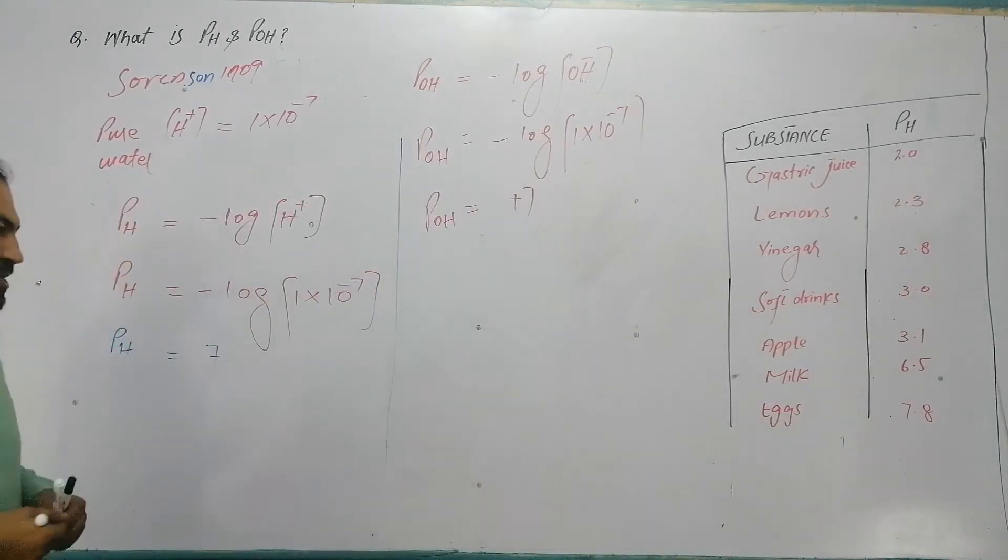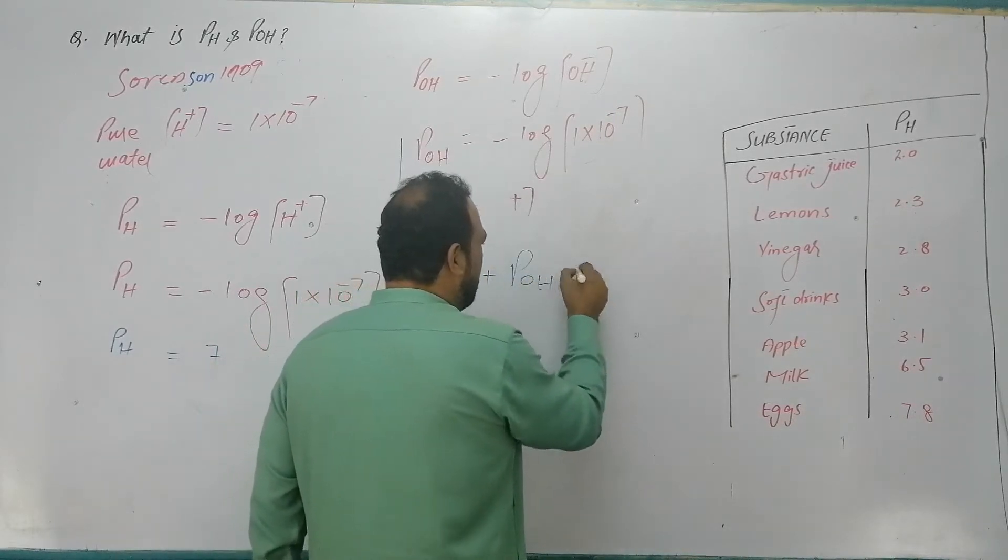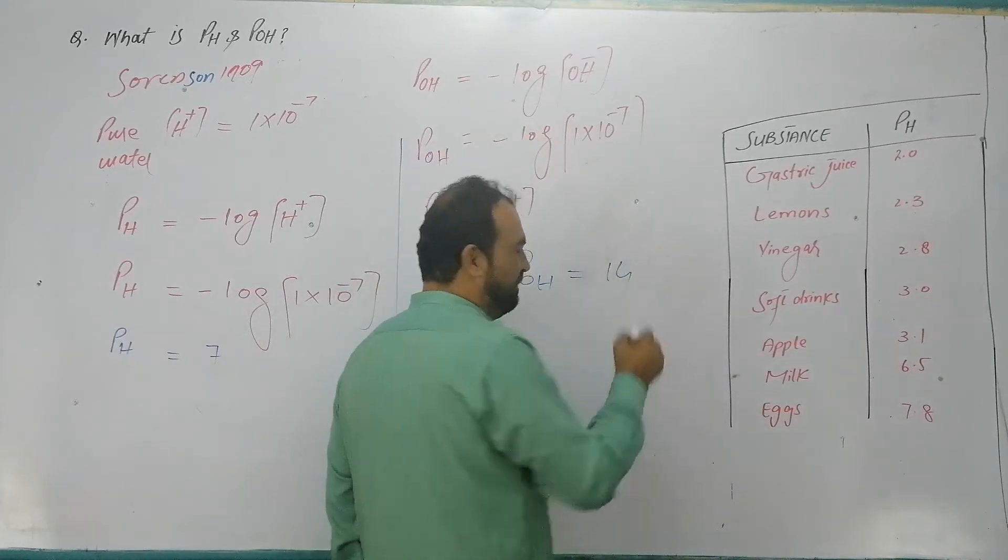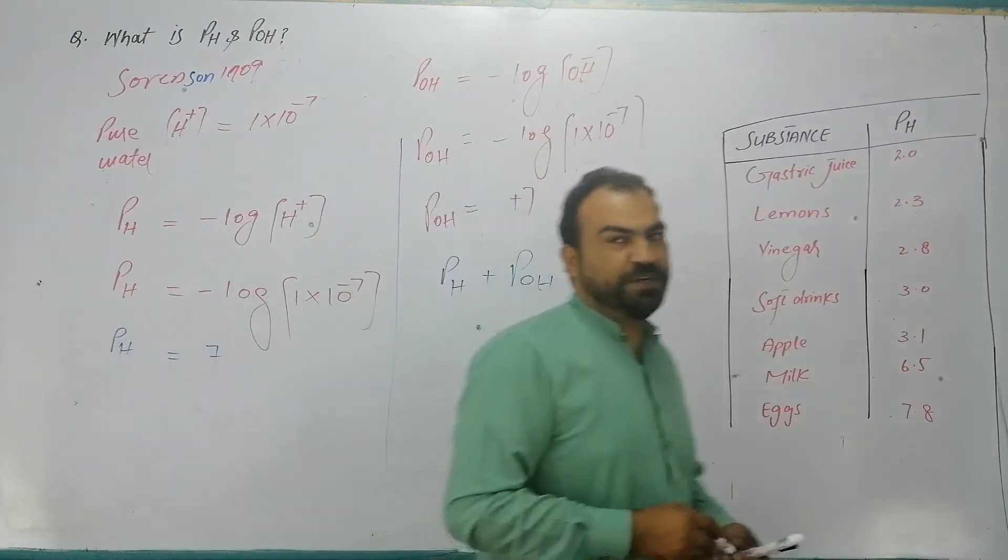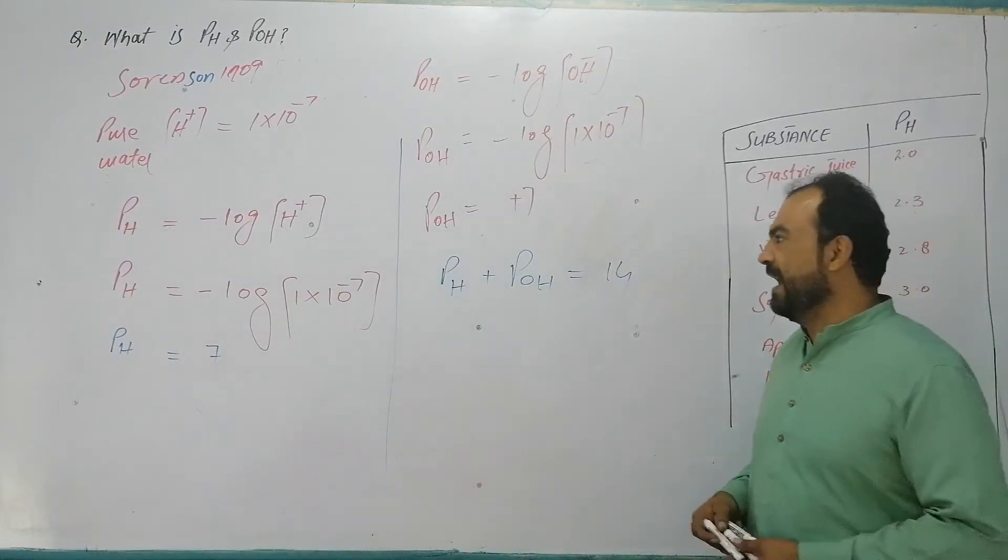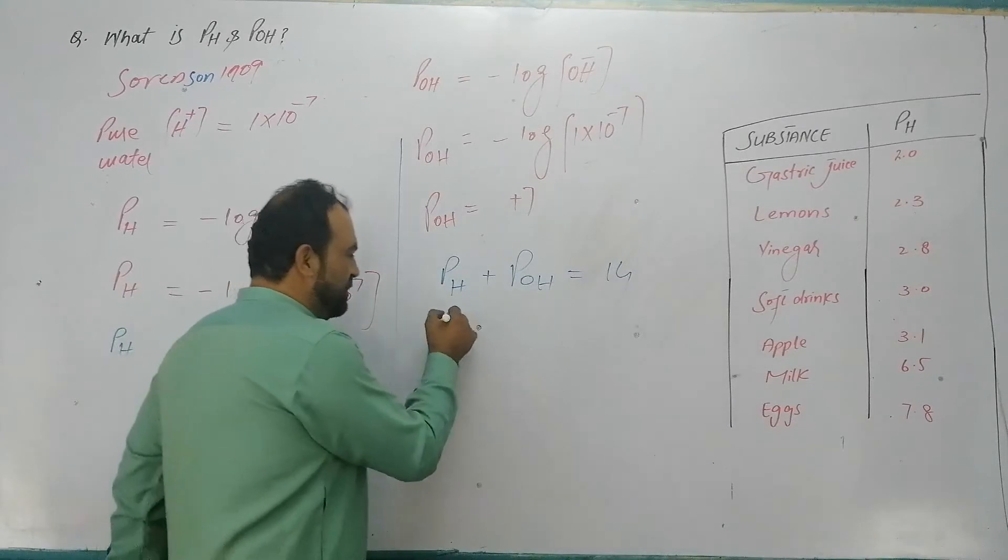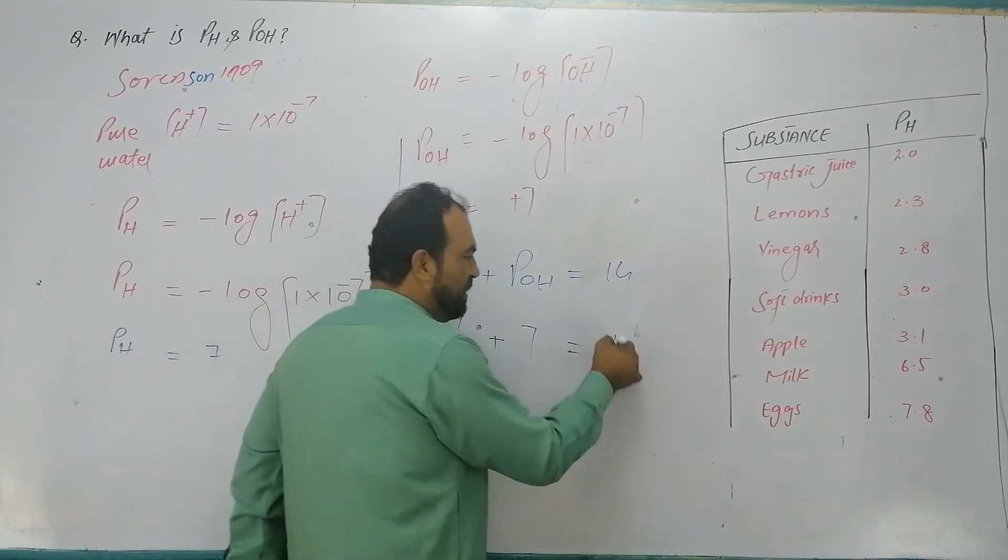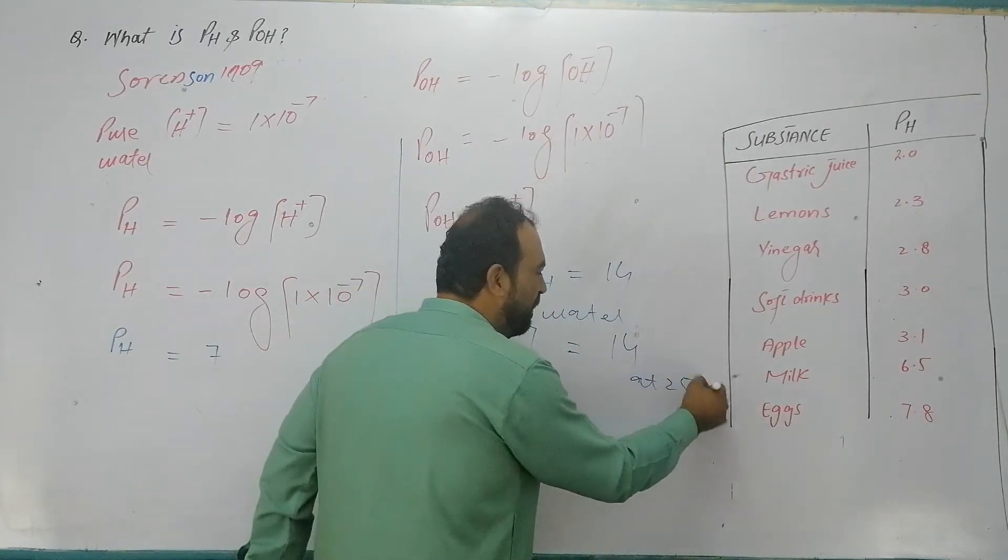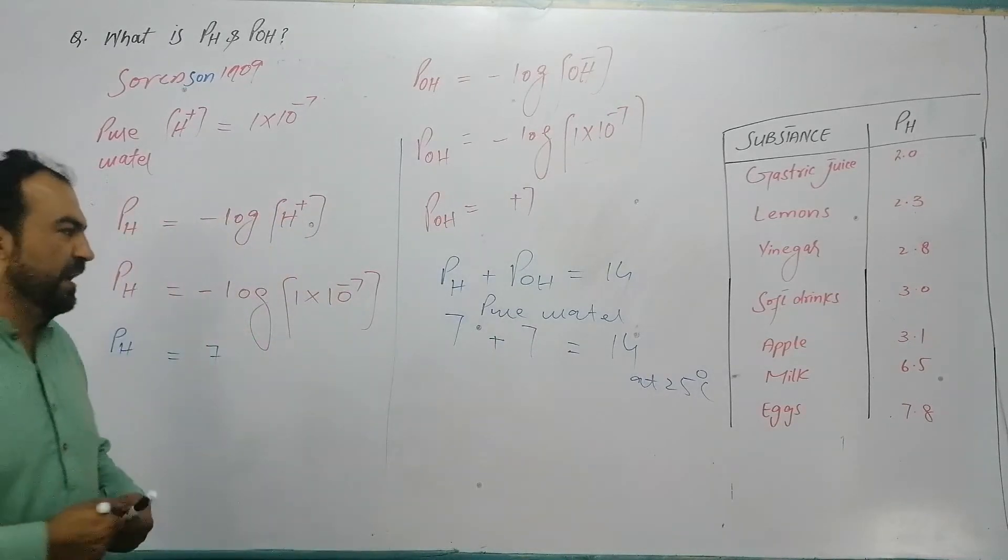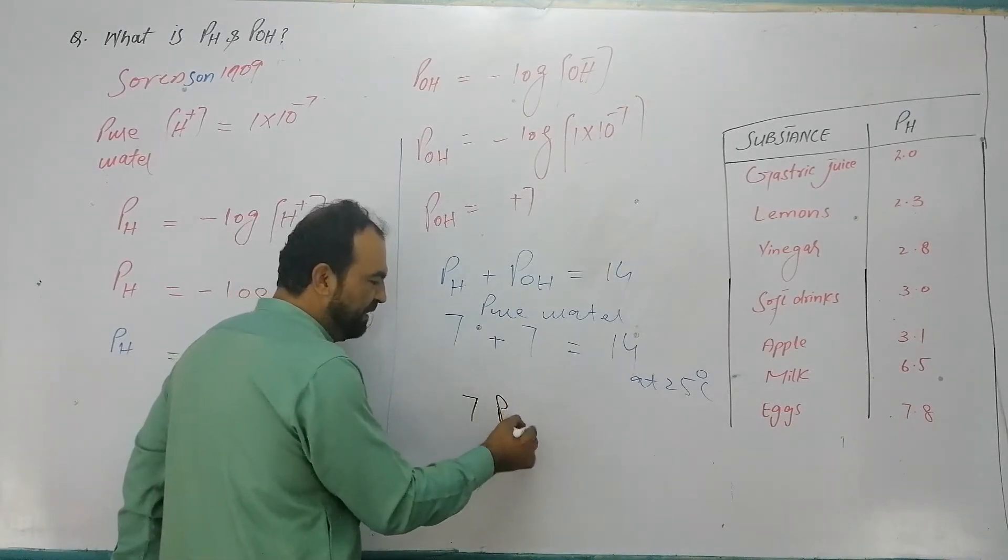pH and pOH is equal to 14, because negative log of 1 into 10 raised to power minus 14 is equal to 14.